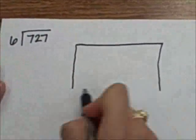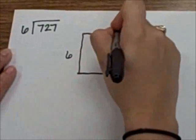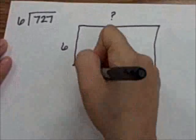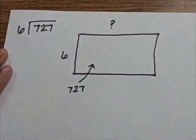We need to think of this as an array. We know we have 6 rows, we do not know our number of columns, but we know that we have 727 inside our box.